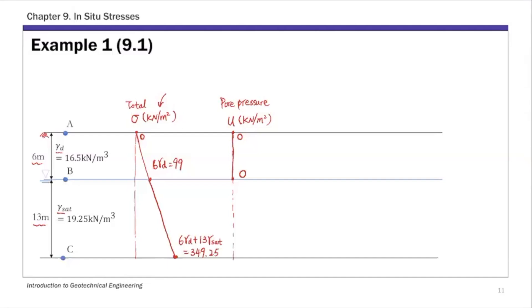For point C at the bottom of the soil profile, pore pressure equals gamma water times the corresponding depth of 13 meters — the height of the water column from point C up to the water table. Using gamma water of 9.81 kN/m³ in SI units, this gives a pore pressure of 127.53 kN/m².